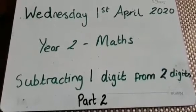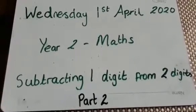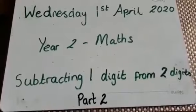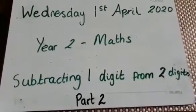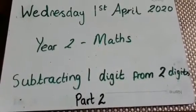Hi everyone, it's Wednesday, 1st April 2020. Year 2 Maths, subtracting one digit from two digits, part 2.